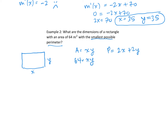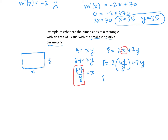We want to find the minimum perimeter. I'll isolate x from the area equation, then substitute into the perimeter formula. The perimeter becomes 2 times 64 over y plus 2y, which is 128y to the negative one plus 2y. Taking the derivative P'(y) gives negative 128y to the negative two plus 2. Setting that equal to zero to find the critical number.